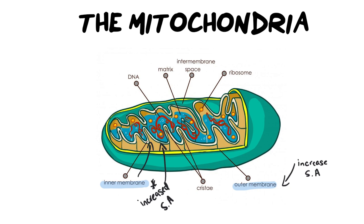The folds of the inner membrane are known as the crista, or cristae, depending on whether you're talking about one or many folds. The mitochondria is also filled with a fluid which we call the matrix — in this picture you can see it is this bluish liquid.